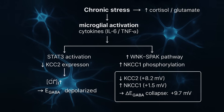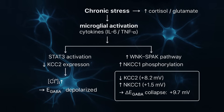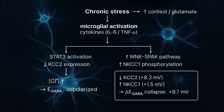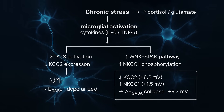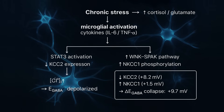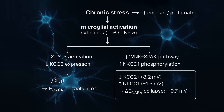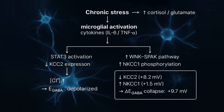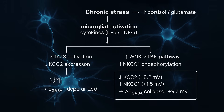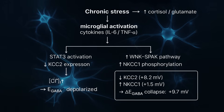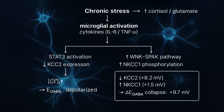Cytokines also activate the STAT-3 pathway, which down-regulates the KCC2 transporter, and the WNK-SPAK kinases, which phosphorylate NKCC1. As a result, intracellular chloride concentration rises and the GABA reversal potential becomes depolarized.